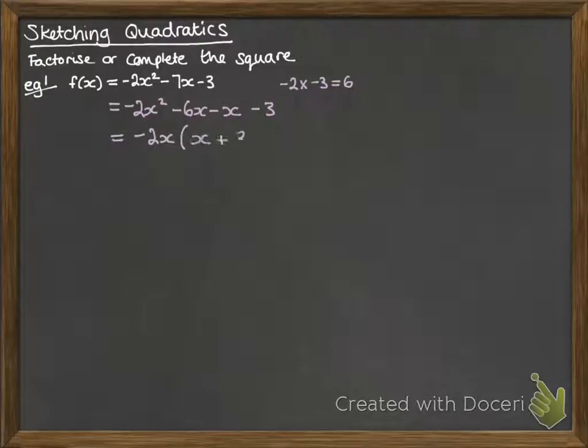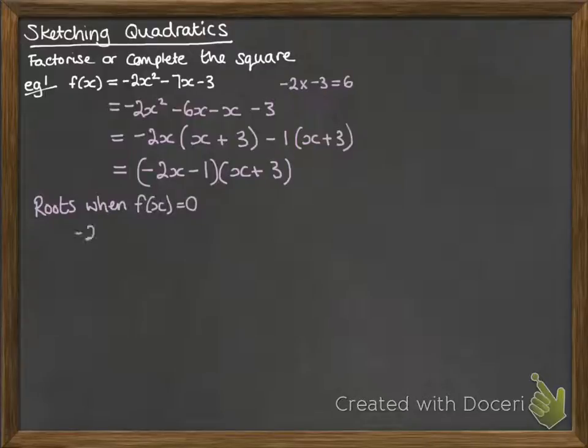Now we can factorize those. Collect up the things that are the same so we've got our two brackets. Now from those we can get the roots of the equation f(x) = 0. So the first bracket, if we set that to be equal 0, x would be -1/2, and the second bracket we set that equal to 0 and we get x = -3.